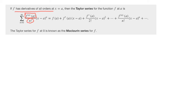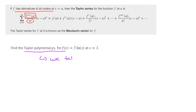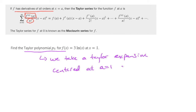Let's apply this to a concrete problem. We're asked to find a Taylor polynomial p₅ for the function f(x) = 3·ln(x) at x = 1. A Taylor polynomial p₅ means we take a Taylor expansion centered at 1 and stop at the term (x−1)⁵ — the degree of the polynomial is 5. So we need all derivatives up through the fifth derivative of this function.